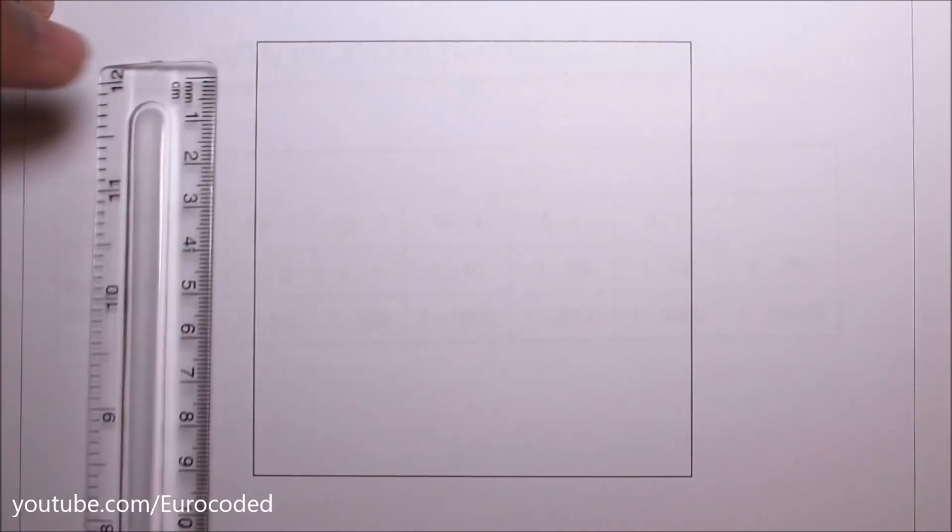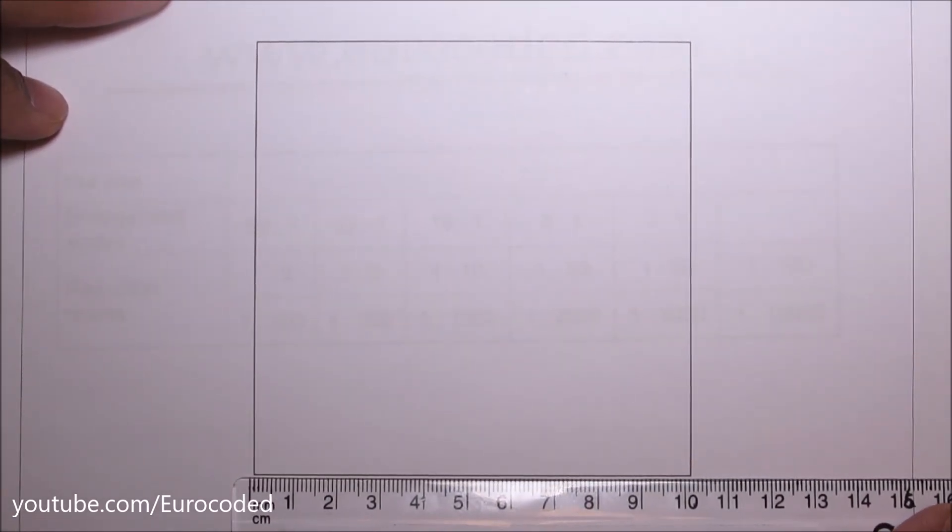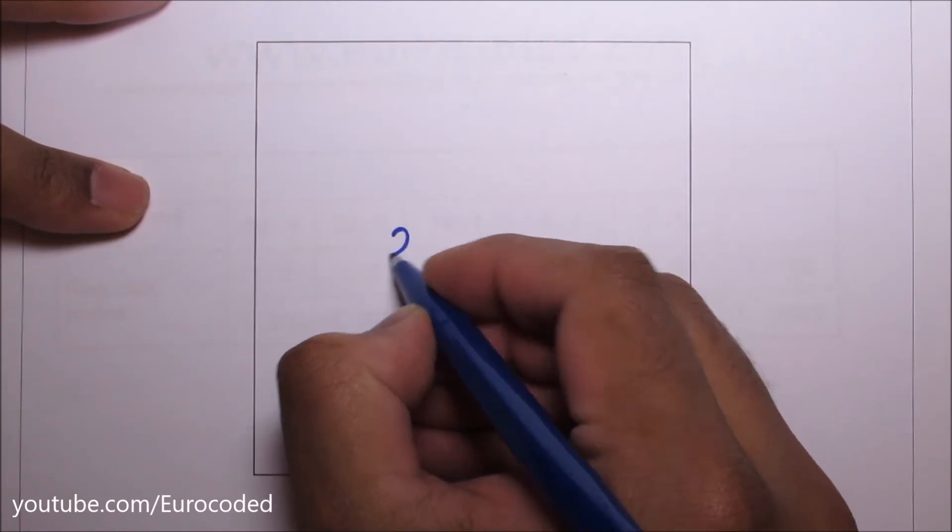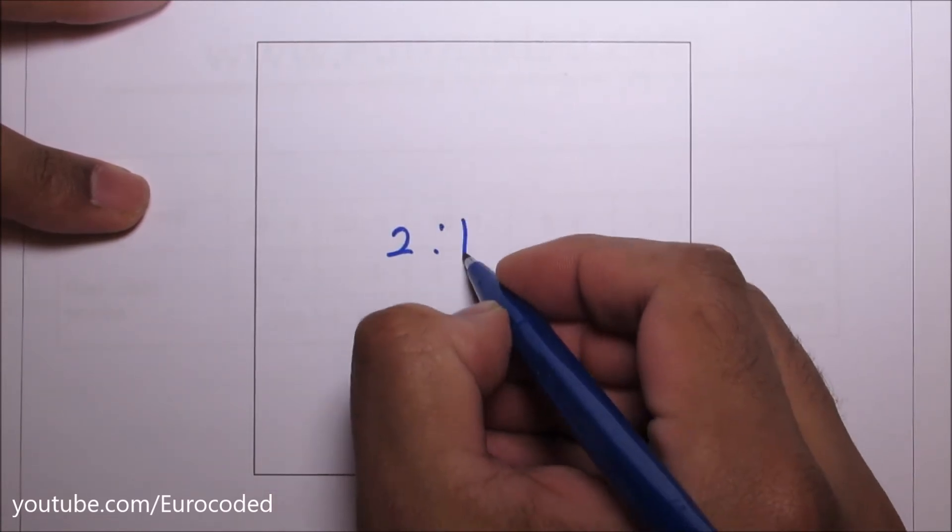You can see that this leg is ten centimeters and this leg is ten centimeters. So this is a drawing drawn to two to one scale.